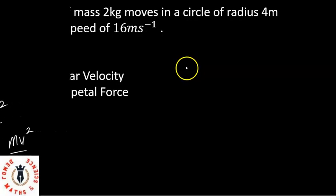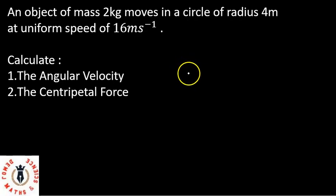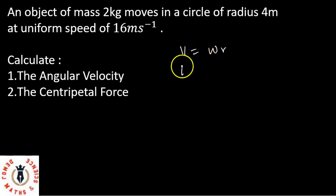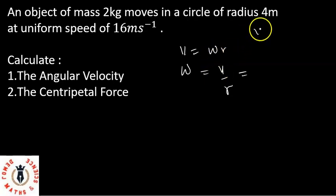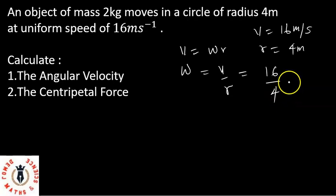Our first example: an object of mass 2 kg moves in a circle of radius 4 meters at a uniform speed of 16 meters per second. Calculate the angular velocity. Angular velocity W — from V equals Rw, we know that W equals V over R. We've been given V equals 16 meters per second and R equals 4 meters. So angular velocity is 16 over 4, which equals 4 radians per second.